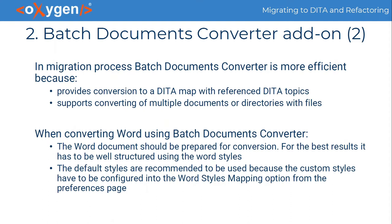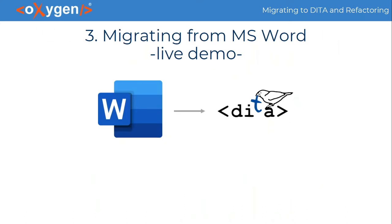In the migration process, the batch documents converter is more efficient because it provides conversion to a DITA map with referenced DITA topics, and it supports converting multiple documents or directories. When converting Word documents, the document should be prepared for conversion for best results — it must be well-structured using Word styles. Make sure you use heading styles for defining sections. Default styles are recommended because custom styles must be configured in the Word styles mapping option from the preferences page; otherwise they will be converted into simple paragraphs.